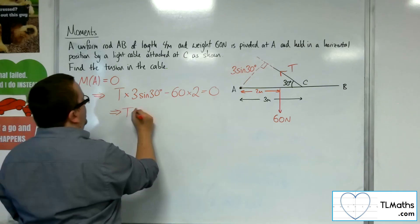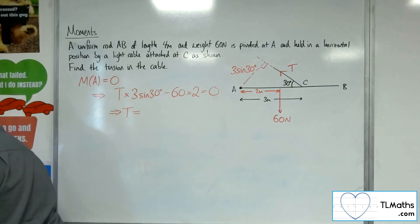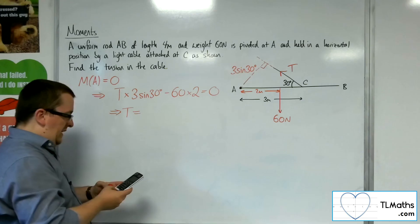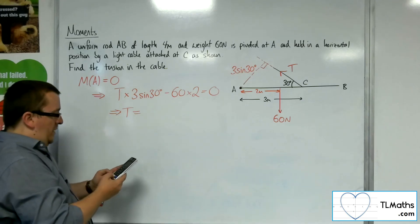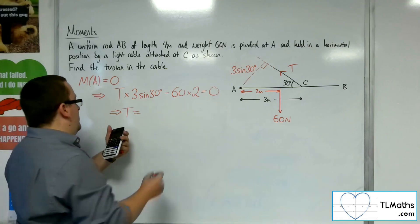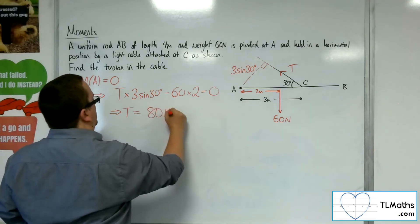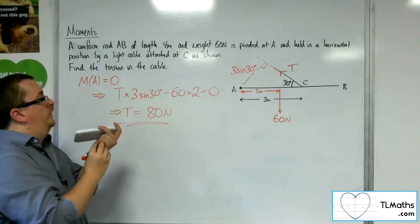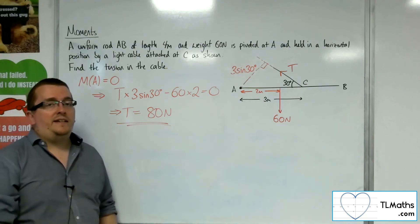This gives me an equation for the tension. We've got 60 times 2, and I need to divide that by 3 lots of sine 30. That gets me 80. So the tension in the cable is 80 newtons.